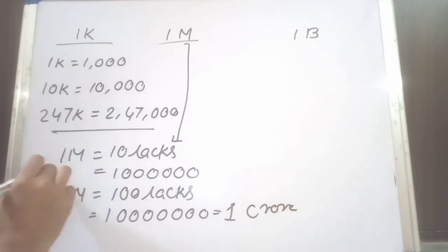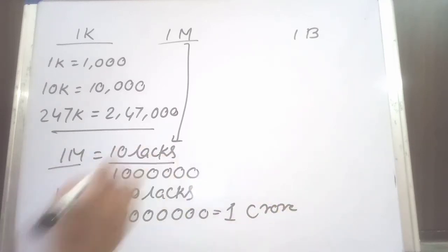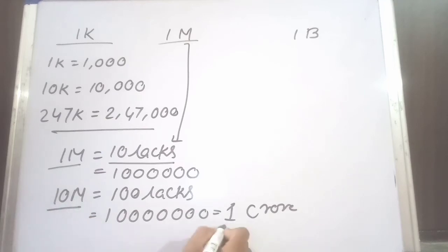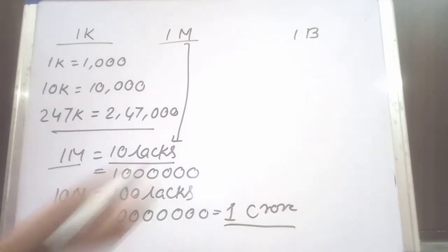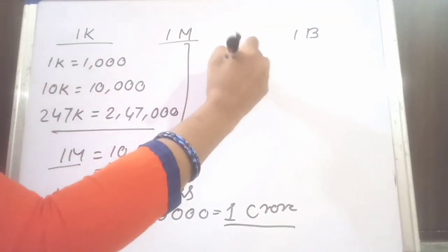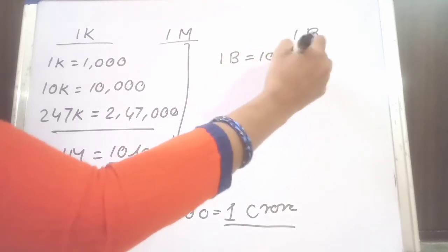So 1 million means 10 lakhs, 10 million means 1 crore. 1 billion. 1 billion means 100 crore.